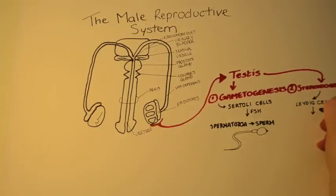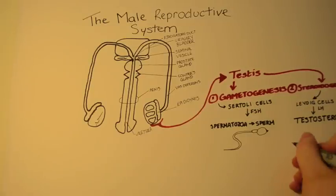The Leydig cells of the testes are responsible for the production of the steroid hormone, testosterone. Luteinizing hormone from the pituitary gland is responsible for activating the Leydig cells. Testosterone has many functions, including development of the secondary sexual characteristics.